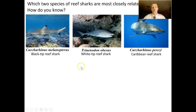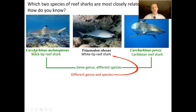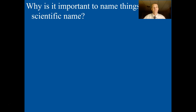Which two species of reef sharks are most closely related? If you look at these particular reef sharks — the black-tipped reef shark, the white-tipped reef shark, and the Caribbean reef shark — you can determine relatedness by the genus name. Two of them share a genus name in common, and one doesn't. Same genus means they are more evolutionarily closely related to each other; a different genus means they are going to be more different.